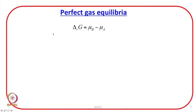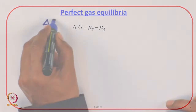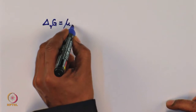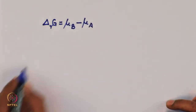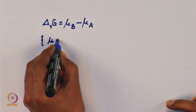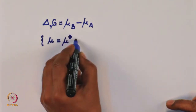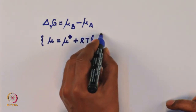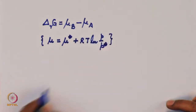The discussion in the previous lecture led to the derivation of this equation: the reaction Gibbs function — this is the slope of the variation of G with respect to xi — is equal to the difference in chemical potentials. So delta Rg, which I am repeatedly saying is a slope, is equal to the difference in chemical potential mu B minus mu A. We know that for a perfect gas, mu is equal to mu naught plus RT log P by P naught. This is the definition of chemical potential for a perfect gas.